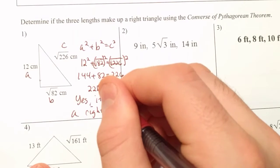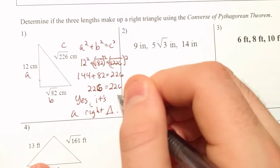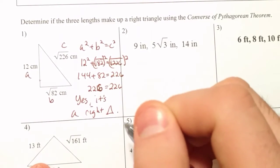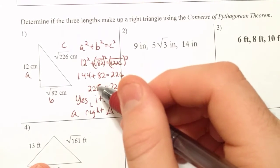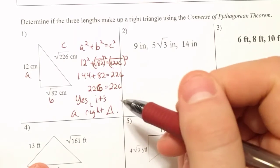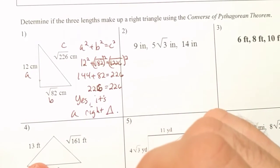Sorry, I wrote 222 accidentally. It should be 226 equals 226. If these were unequal, like if I did actually write 222 and it was correct, this wouldn't be a right triangle. It should be some other kind of triangle besides a right triangle.